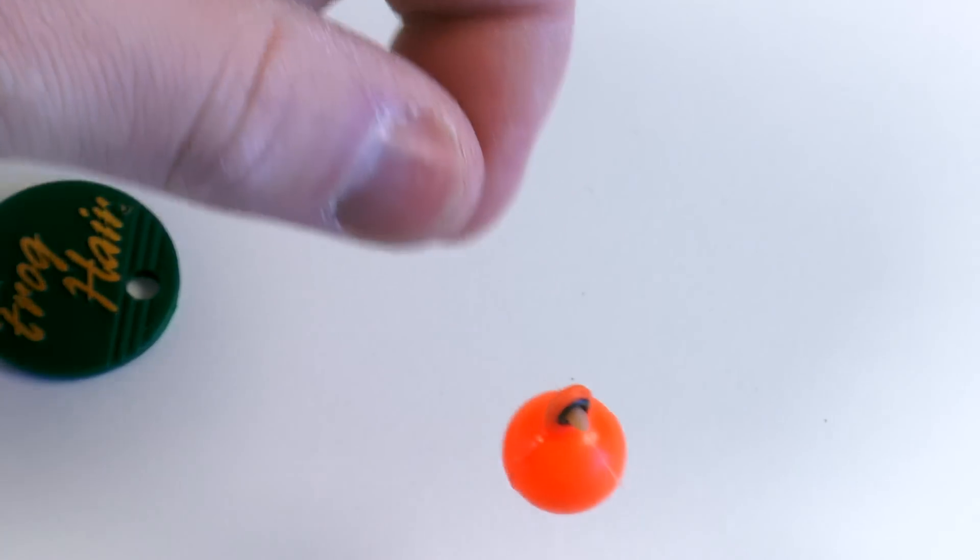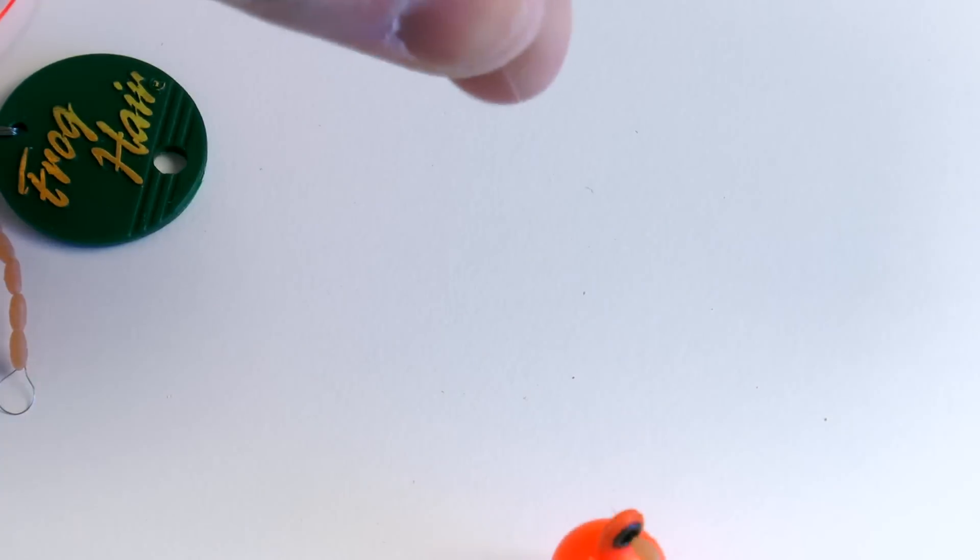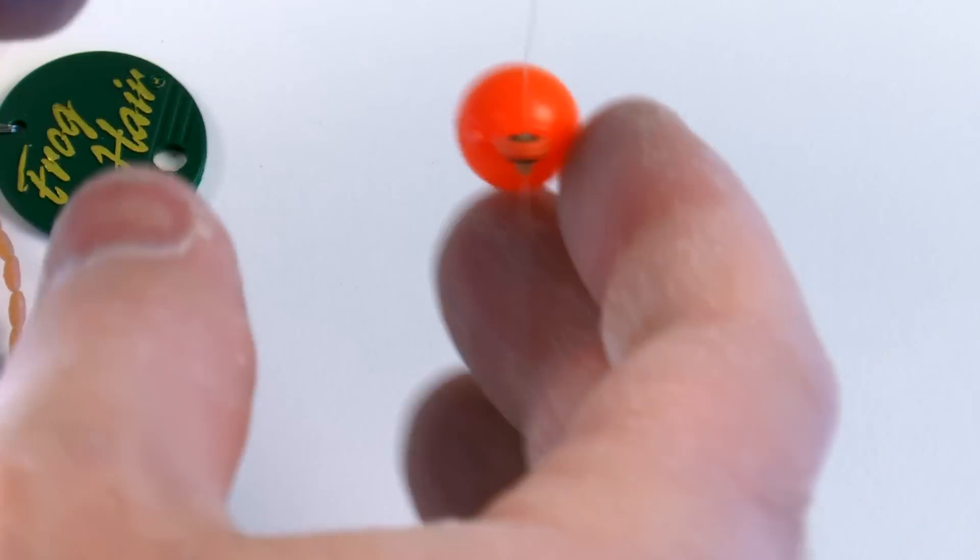Now what else you can do is you can space them out. So that way you can kind of use a semi-stillwater rig where that thingamabobber can kind of float in between the two stoppers or the two grommets.